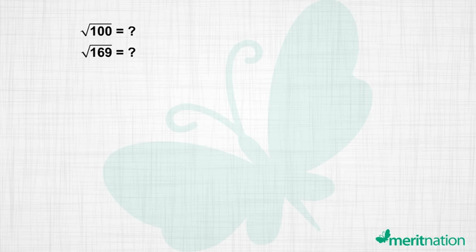We need to find the square roots of 100 and 169 by the method of repeated subtraction. Let's pick 100 first. I know you can easily find the answer but we need to use a different method.